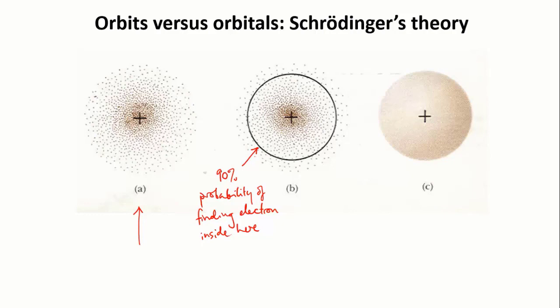You could think about it as the electron spending 90 percent of its time within the circle and 10 percent of its time outside it. The black circle could also be represented as a sphere, as on the right here, which encloses the region of 90 percent probability. Orbitals are often drawn with solid looking surfaces like this because it's the easiest way to represent their shapes. But you must remember that there is no actual wall or surface. It's just a convenient way of indicating where the electron spends most of its time.